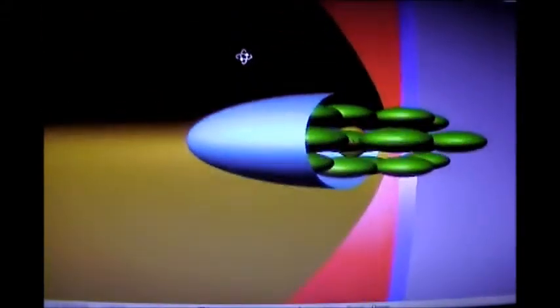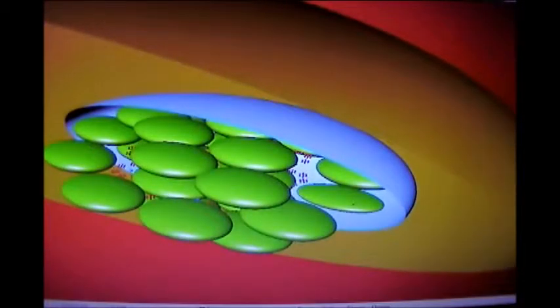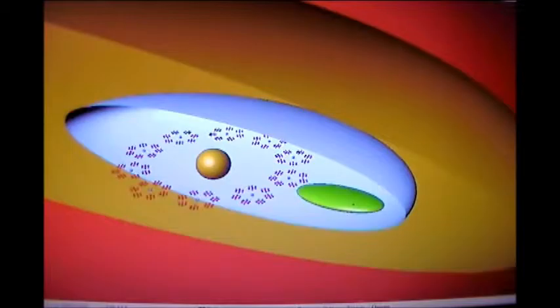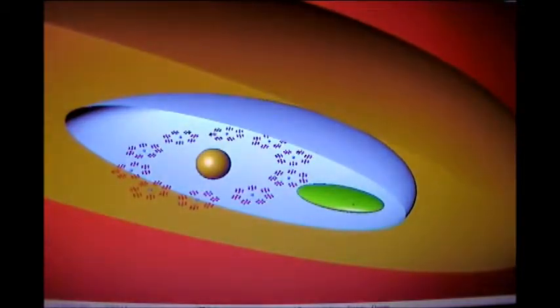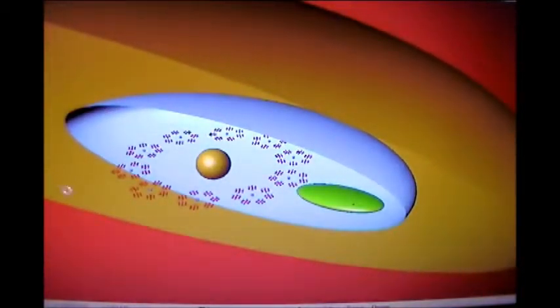There are only 10 major sectors in a super universe. This is kind of looking out towards Paradise — I just wanted to show you that before I show you our constellation. Let's remove the others. With the other constellations out of the way, we can see ours, which is Norlatiadek. And we can also see the capital of Nebadon, which is Salvington.